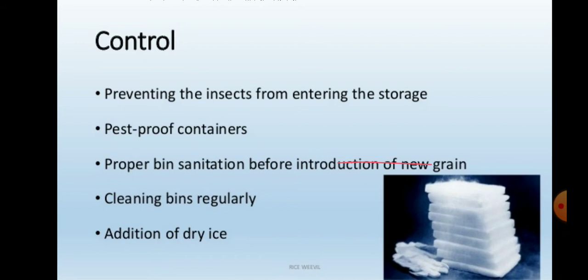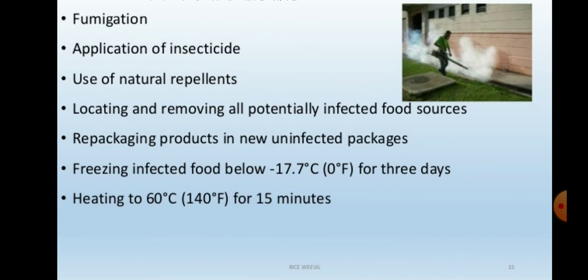Use pest-proof containers such as plastic containers or drums for storing food grains. Sanitize storage bins before introducing new grains, carry out fumigation properly, and clean the bins regularly. Also use dry ice and insecticide fumigation as chemical control measures.